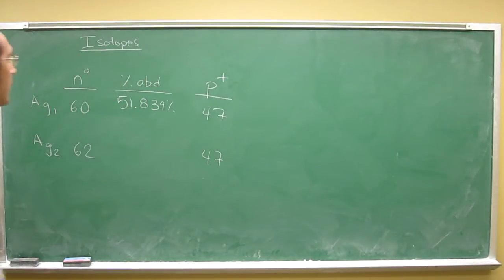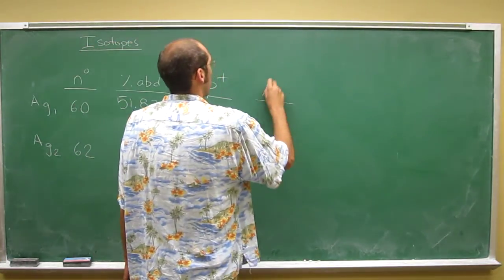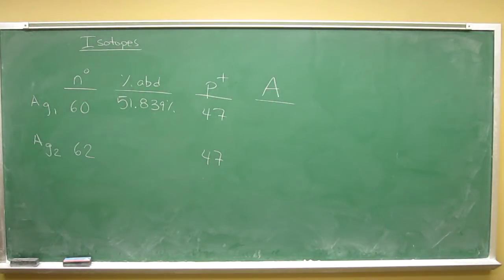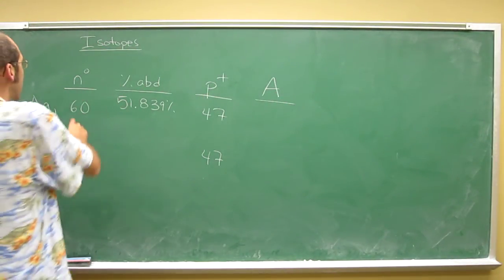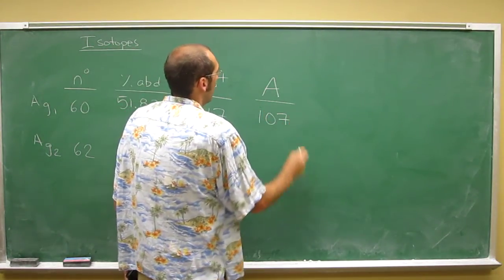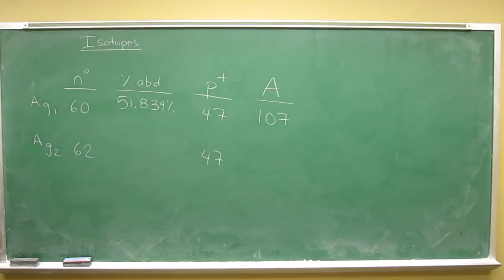So the mass number, remember capital A sometimes is used for mass number, is going to be 60 plus 47, I guess you don't need your calculator for that one, 107 Daltons or whatever.